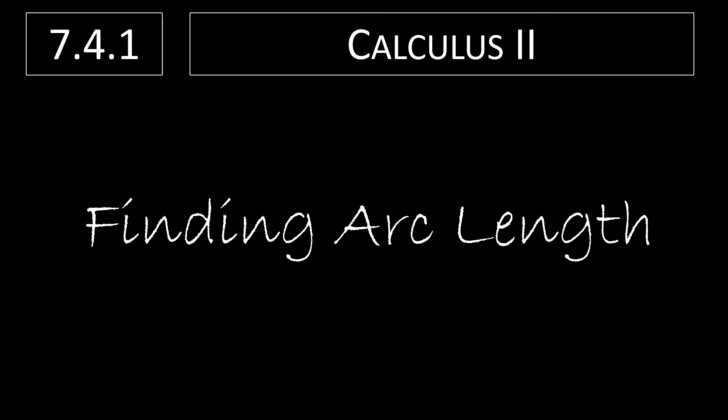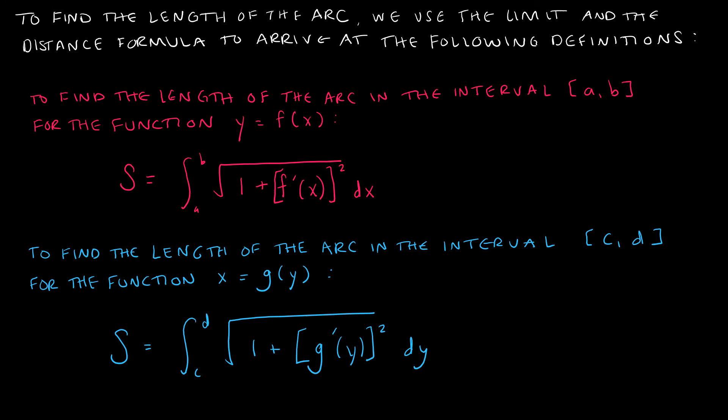In this video we are going to take a look at how to find arc length. To find the arc length we essentially need to know the distance formula and the limit as those changes in X and changes in Y become smaller and smaller. I'm not going to go through the method in which these formulas came from. The formula tells us that to find the length of the arc over the interval from A to B, those are our limits of integration, and we take the square root of 1 plus F prime of X squared DX.